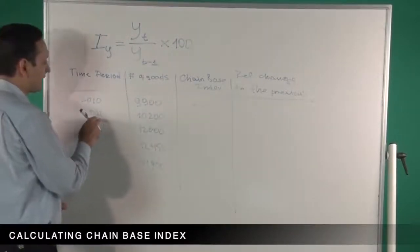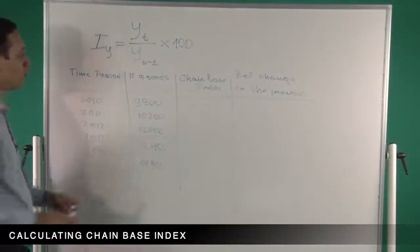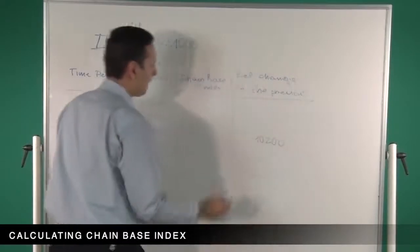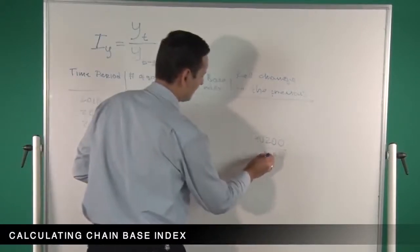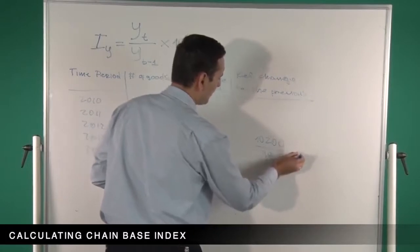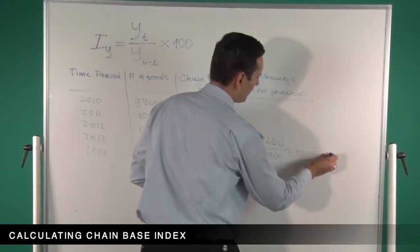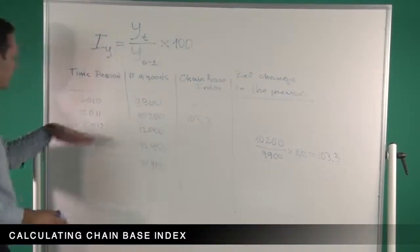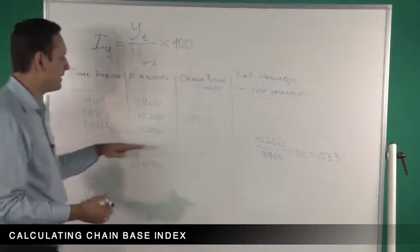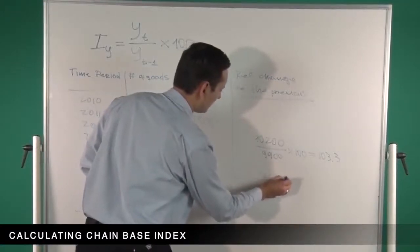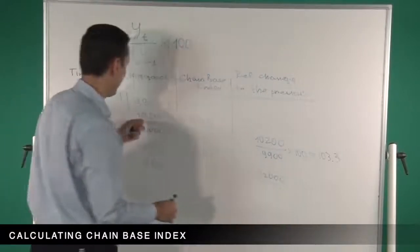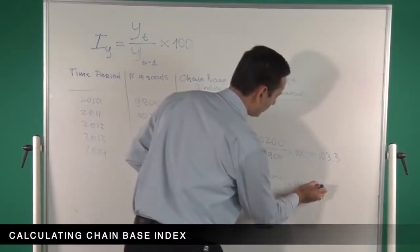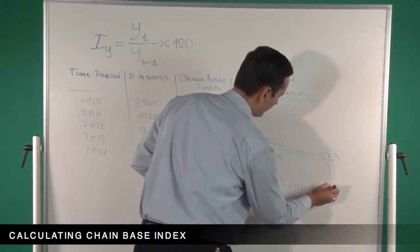We start from 2011 and compare it to 2010. We divide 2011's number, which is 10,200, by the previous year, which is 9,900, and multiply by 100. Our answer is 103.3. Now to calculate the chain-based index for 2012, we divide 12,000 by the previous year's number of goods sold, which is 10,200, multiplied by 100. That equals 117.65.